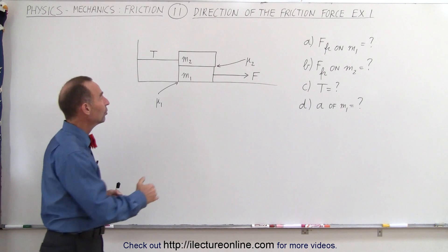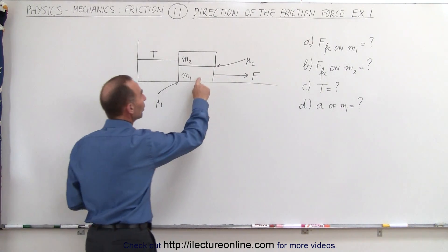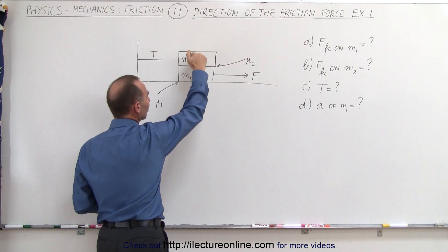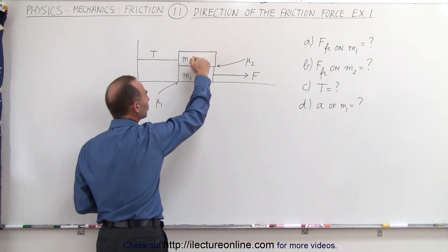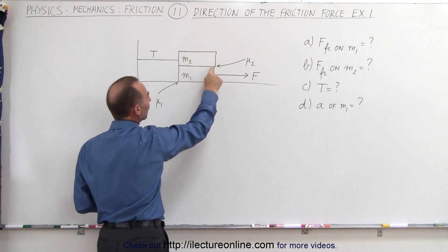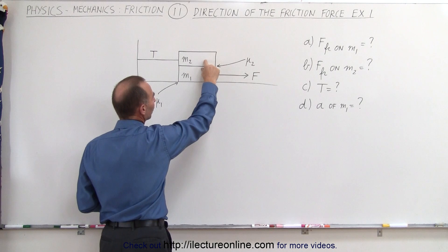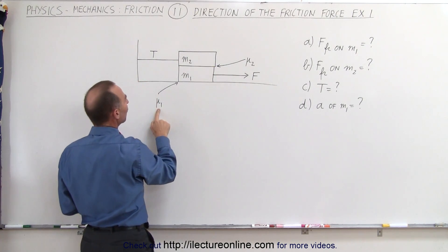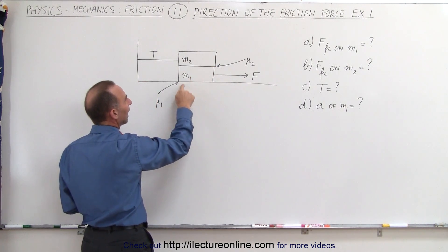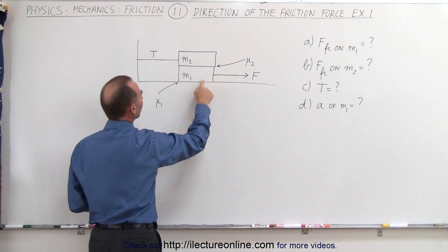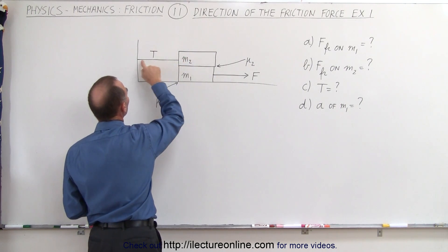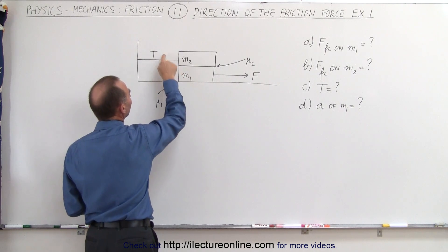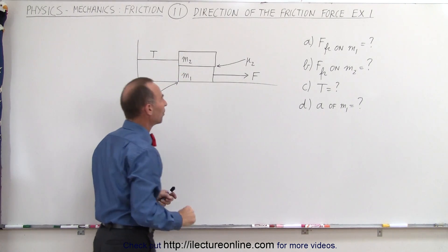Here we have a situation where we're pulling on block 1 with mass M1, and there's a second block sitting on top, M2, with a coefficient of friction between the two surfaces — between M1 and M2 — and a different coefficient of friction between M1 and the ground surface. Also notice that M2 is attached to the wall with a string or rope, and there will be some tension on that rope.